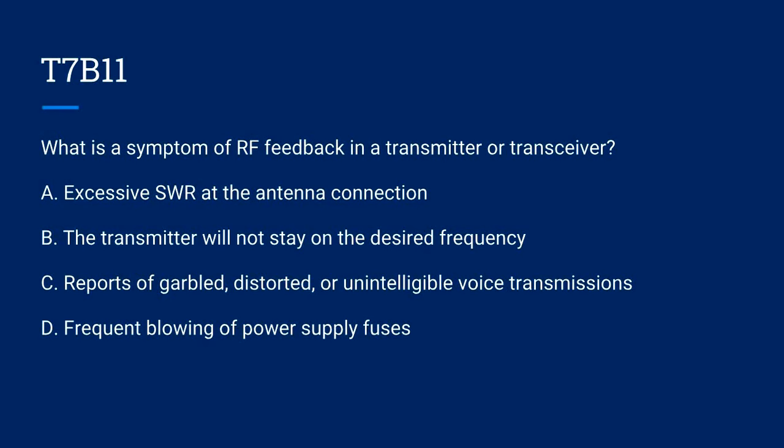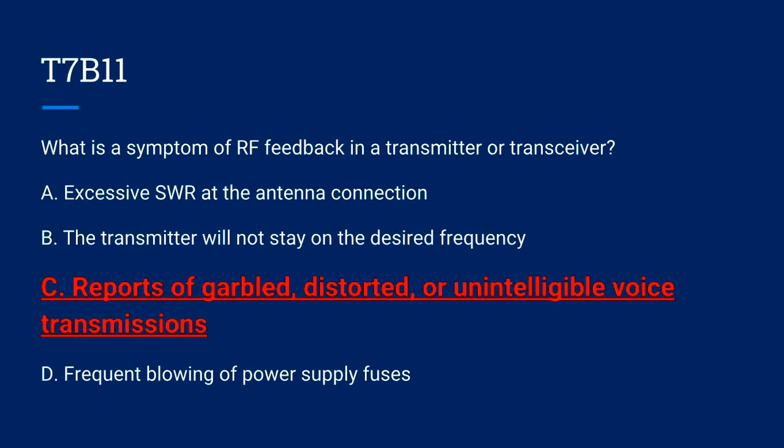T7B11. What is a symptom of RF feedback in a transmitter or transceiver? A. Excessive SWR at the antenna connection. B. The transmitter will not stay on the desired frequency. C. Reports of garbled, distorted, or unintelligible voice transmissions. Or D. Frequent blowing of power supply fuses. The correct answer is C. Reports of garbled, distorted, or unintelligible voice transmissions.